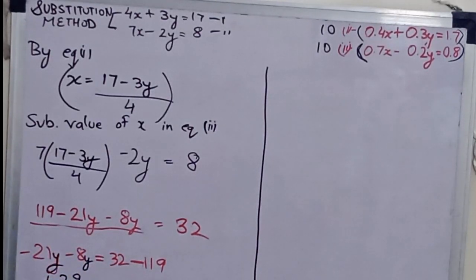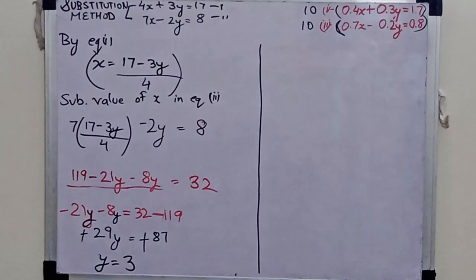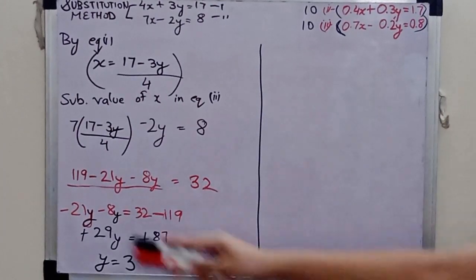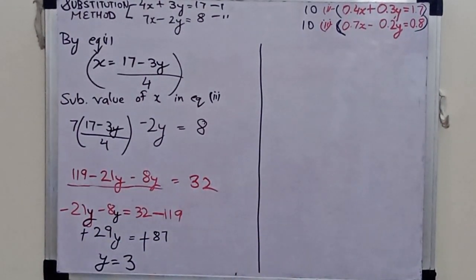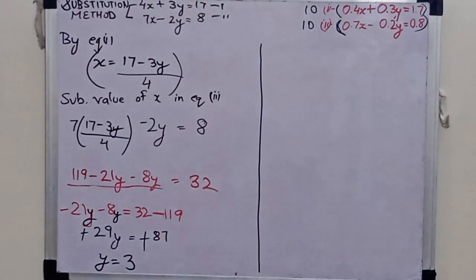Minus 29Y equals to minus 87. Minus minus will get cancelled. Therefore 29Y equals to 87, and Y equals to 3.